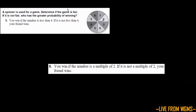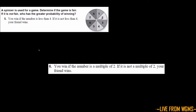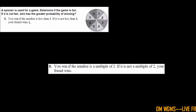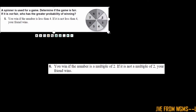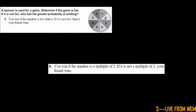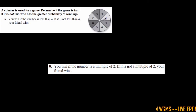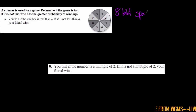Now some other examples. A spinner is used for a game to determine if the game is fair — meaning both outcomes are equal. If it is not fair, who has a greater probability of winning? You win if the number is less than four; if it is not less than four, your friend wins. There are eight total spaces, numbered one through four.